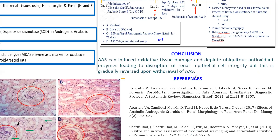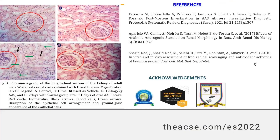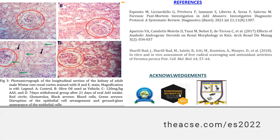From this study, we conclude that anabolic androgenic steroids can induce oxidative tissue damage and deplete the ubiquitous antioxidant enzyme, leading to destruction of renal epithelial cell integrity, but this is reversed upon withdrawal of anabolic androgenic steroids. I want to appreciate the Emerging Scientists Conference organizers for sponsoring this presentation, and Bingham University for providing facilities to carry out this research, as well as the other supporting universities. Thank you.